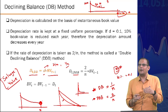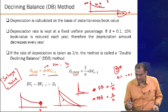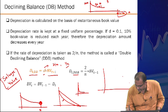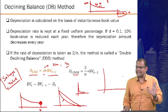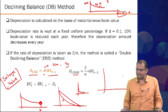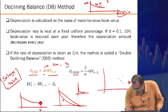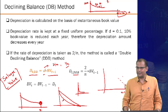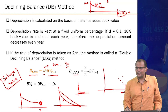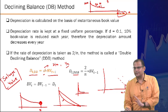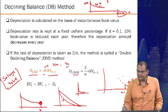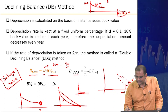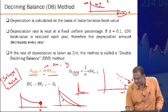You will never be allowed to depreciate beyond the originally estimated salvage value. If you start with DDB and reach a value below the original estimated salvage, you must switch methods so the combined result still reaches that prescribed salvage point. If the result is slightly higher, you also need to adjust the method to converge to that same salvage value.